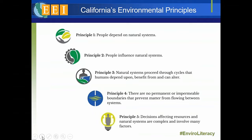Principle one: how humans depend on natural systems. Principle two: we influence those systems. Principle three: about some of the cycles that humans can benefit from and can alter. Principle four: about there being no impermeable boundaries. And principle five: about some of the decision-making processes that can go into environmental decisions. With the EEI curriculum, you see principle five more at some of the middle school and high school units.